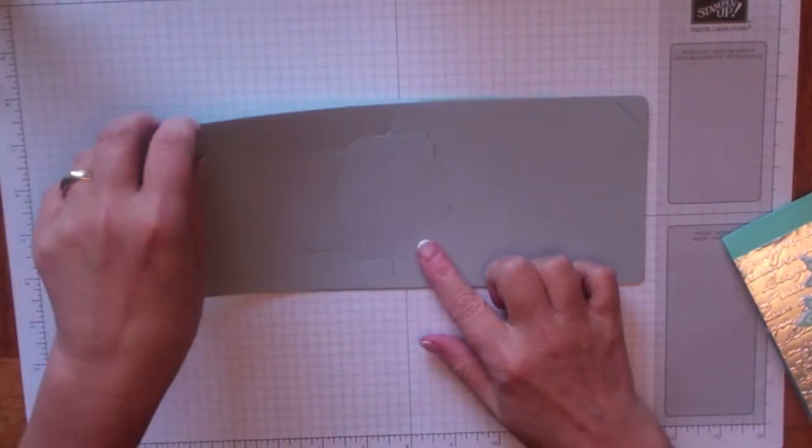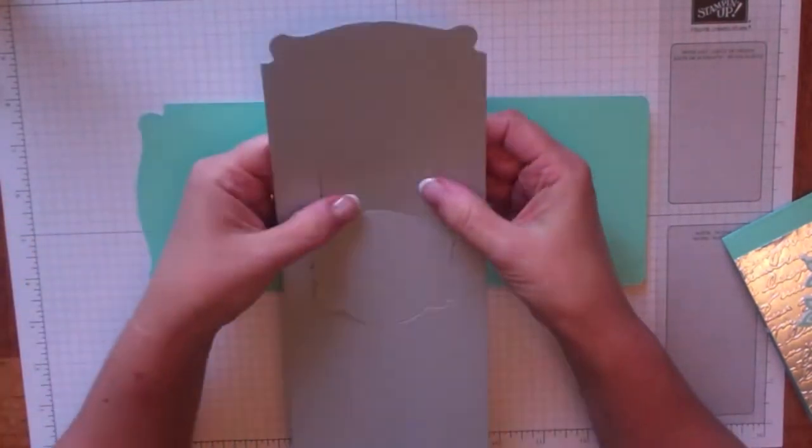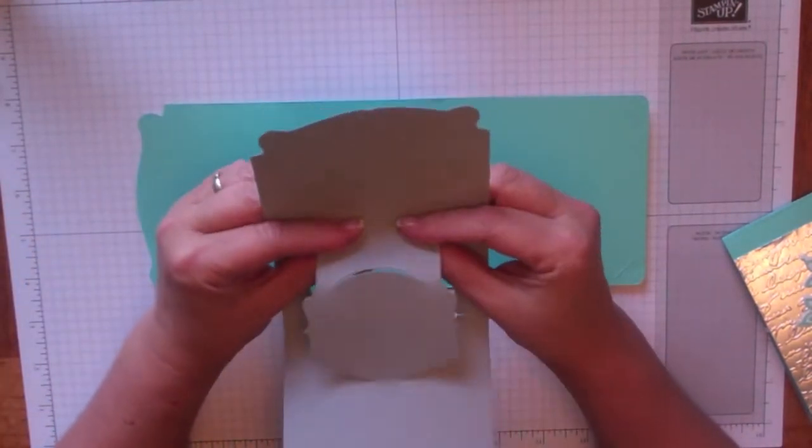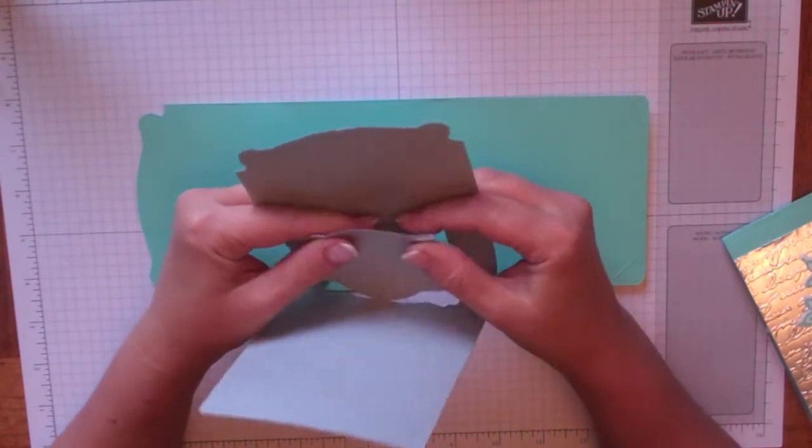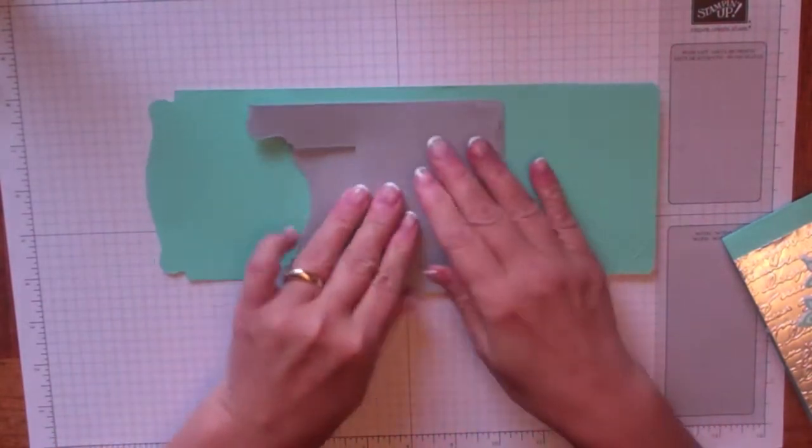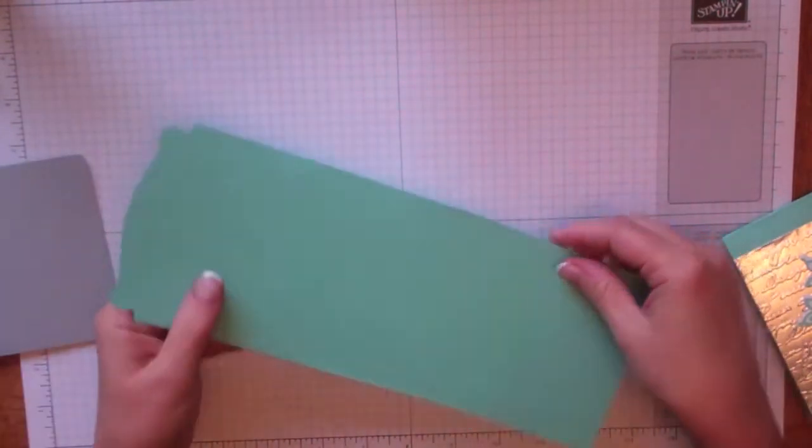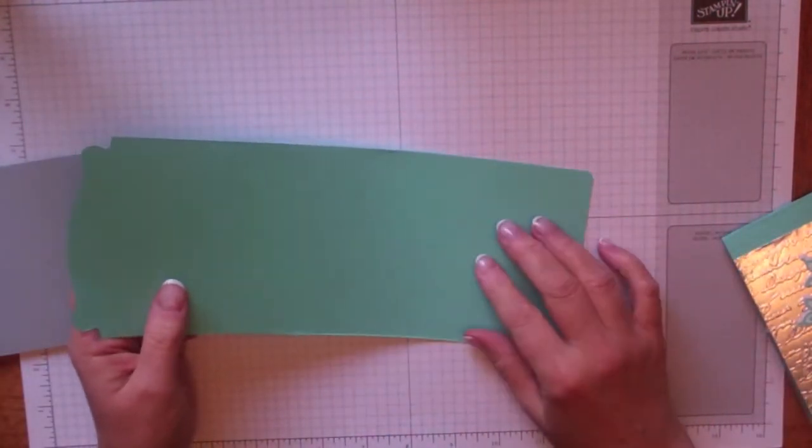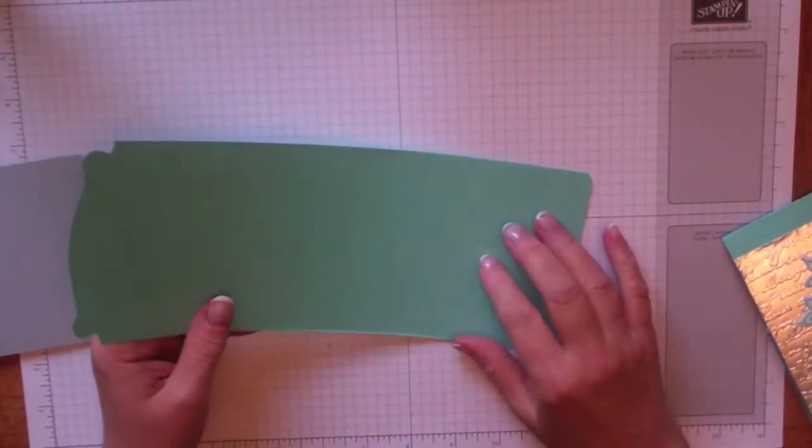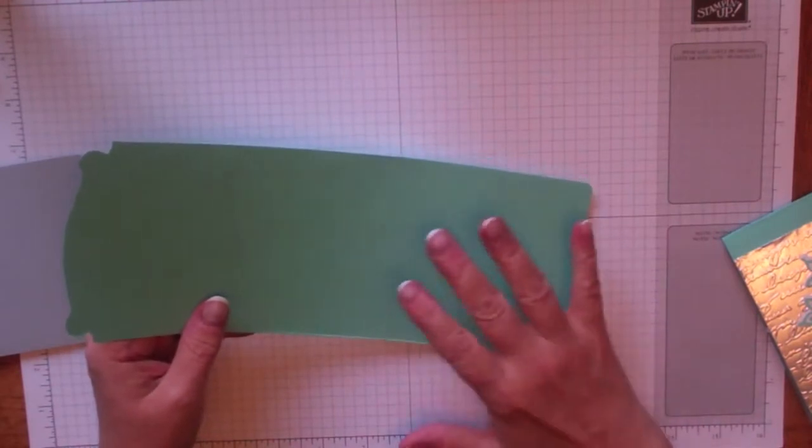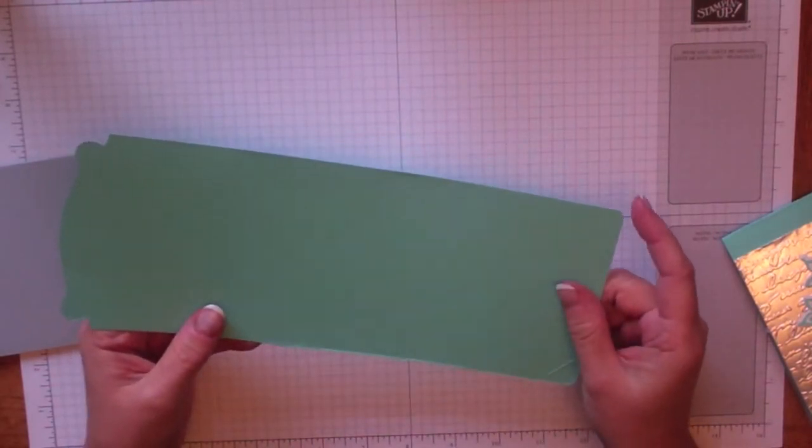For the center piece here, you just want to fold it on the score lines. So this piece is going to fold out like so, and then it just folds. That's how you get it to stand up. This piece here is not scored, and there's a reason for that.